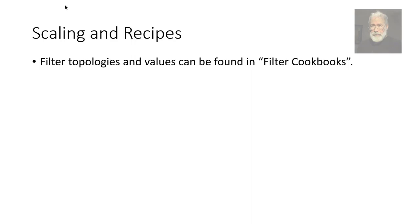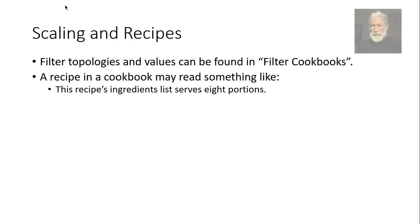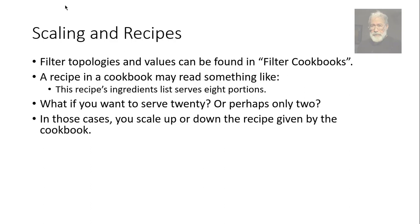Scaling and recipes. Filter topologies that we find in filter cookbooks need to be scaled. Think of this situation in a kitchen. A recipe in a cookbook may read something like this: This recipe's ingredients serves eight portions. But the reality is that we have 20 guests or perhaps only two. What do we do in this case? You know the answer. We scale ingredients list up or down according to our needs.